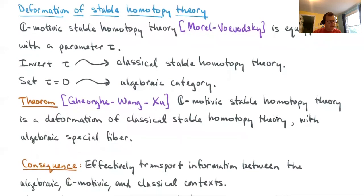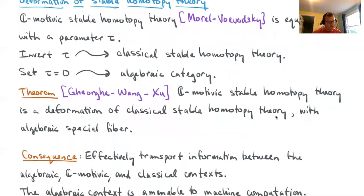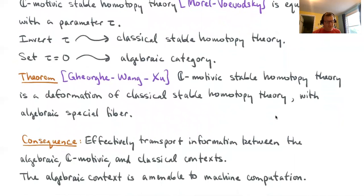These ideas about inverting τ and setting τ equal to zero can be repackaged in nice language in this theorem of Isaksen-Wang-Xu, which is that C-motivic stable homotopy theory is a deformation of classical stable homotopy theory with algebraic special fiber. That's just fancy language for what we're saying about inverting τ to get classical and setting τ equal to zero to get this algebraic category. The consequence of this theorem is that you can effectively transport information between these three contexts: the algebraic category, C-motivic category, and the classical category, because they're related nicely in this deformation.